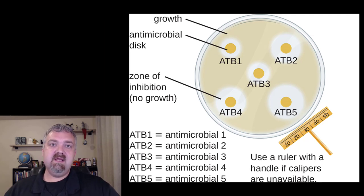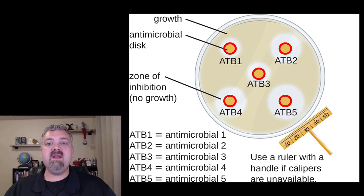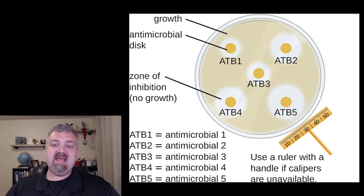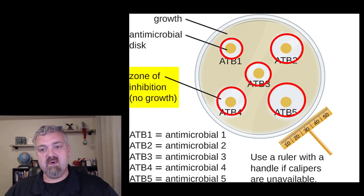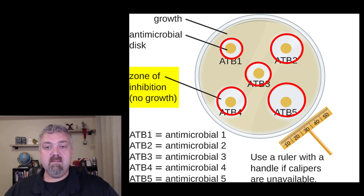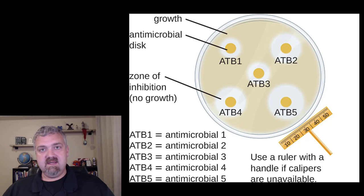So you cover the entire plate with organisms and then you put these disks that have known quantities of antimicrobials, antibiotics on them. Then you incubate them and come back and look. What we're looking for are these clear areas, known as zones of inhibition — how large of an area around one of these paper disks is there no microbial growth? That will tell us a few things, but just so you know, just having a zone of inhibition doesn't tell us everything we need to know.